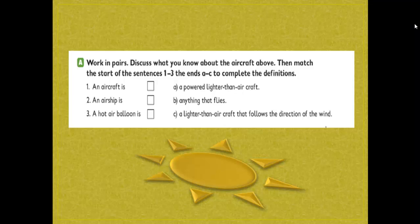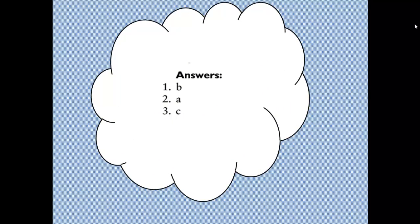The second sentence: an airship is a powered lighter-than-air aircraft — powered by an engine. Number three: a hot air balloon is a lighter-than-air aircraft that follows the direction of the wind, so a hot air balloon is not a powered object. The answers: number one matches with b, number two with a, and finally number three with c.